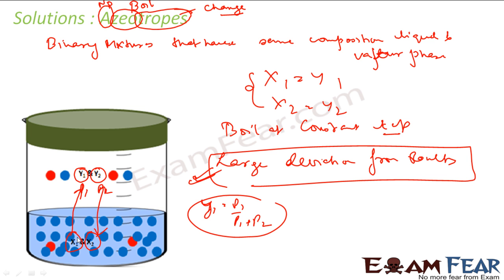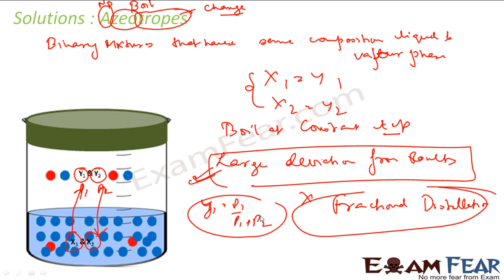Since the concentration in the vapor phase and liquid phase is the same, it is not possible to separate azeotropes using fractional distillation. Fractional distillation works because the concentration in the vapor phase should differ from the liquid phase — you capture the vapor, liquefy it, and get a purified version. But when both phases have the same concentration, fractional distillation will not work.